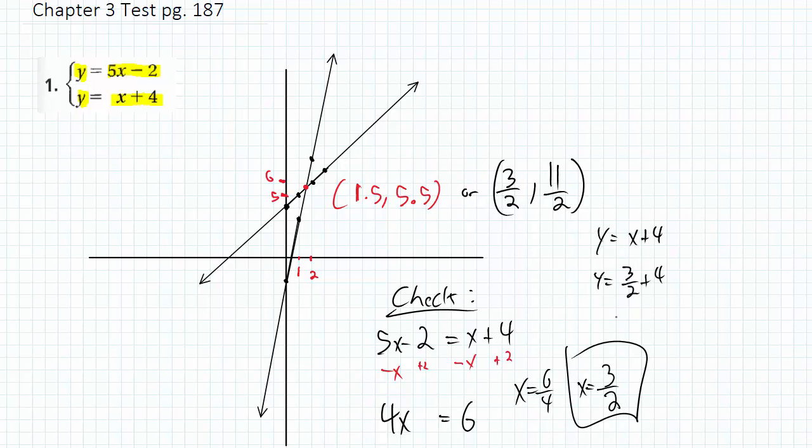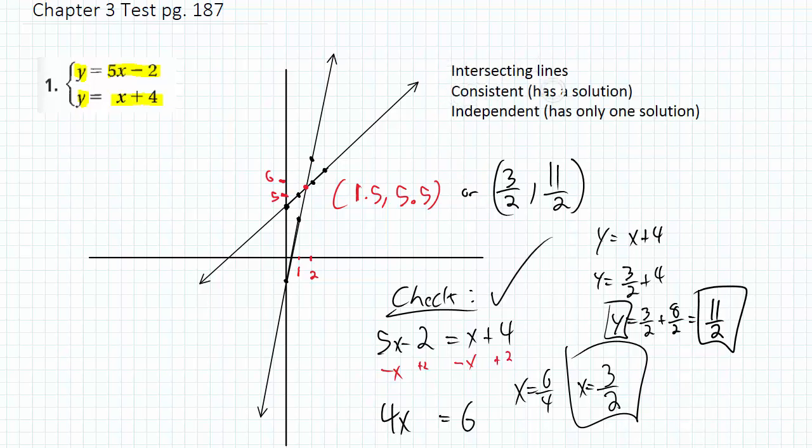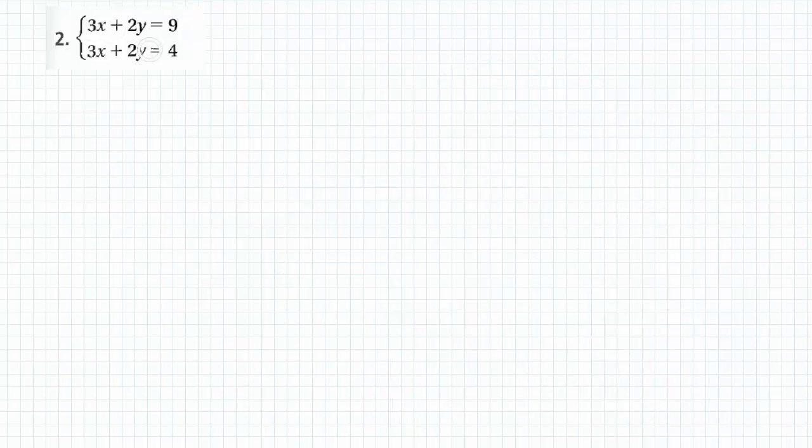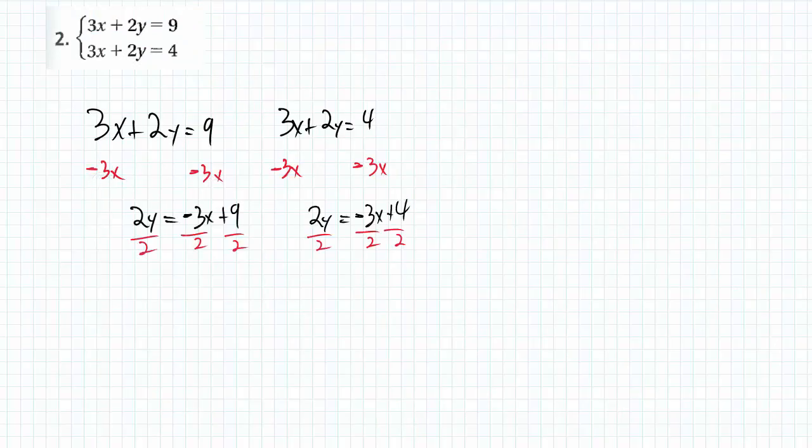I can substitute then that x value into either of the equations for y. The second equation is easier. 11 halves or 5.5 is the y-coordinate. So these are intersecting lines. They're consistent, which means they have a solution. And they're independent because they have only one solution. Really, you just need to know that you can find the solution to both of those equations.